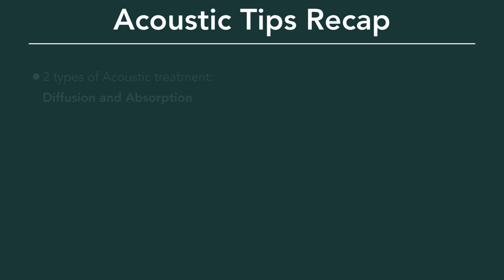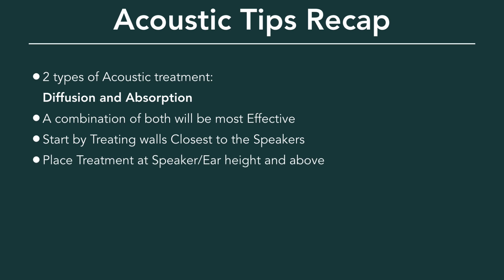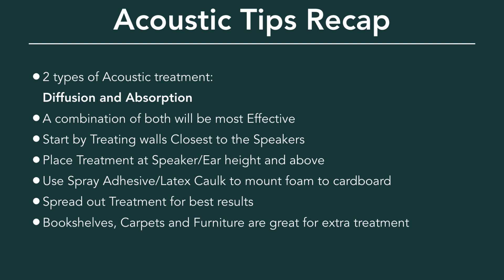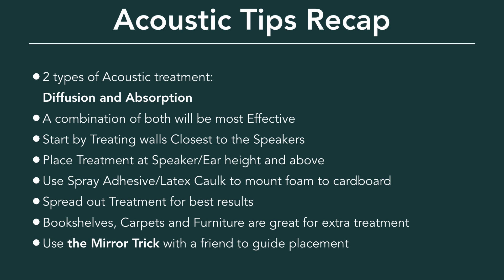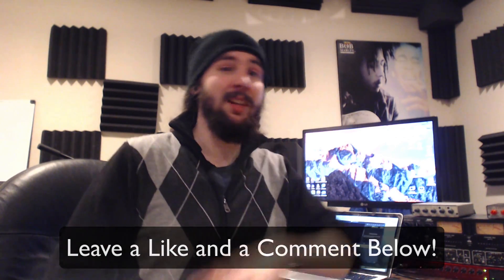So in conclusion, there are two types of acoustic treatment: diffusion and absorption. A combination of both will be most effective. Start by treating the walls closest to your speakers — behind the speakers and to either side. The most effective part of the room to treat is up high, so the area at speaker height and above. Use spray adhesive or acrylic latex caulk to mount the foam to cardboard for a stronger mount to the wall. Make sure to spread out the treatment for best results. Place bookshelves, furniture, and other objects in the room to add extra absorption and diffusion. And when in doubt, use the mirror trick with a friend to inform some of your placement choices. I hope this video has been helpful, and in the future I'll do a video about how to build some rock wall panels yourself, which can be much more effective than just using foam. Check the description below for some Amazon links to the acoustic treatment that I used, and feel free to leave a comment about how you place your treatment or what kind of treatment you find works best. Thanks for watching and bye for now.